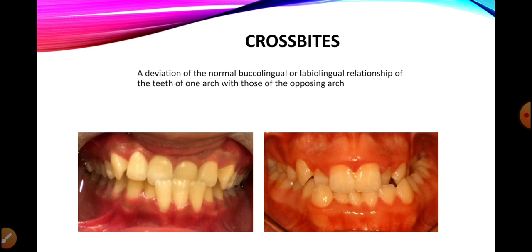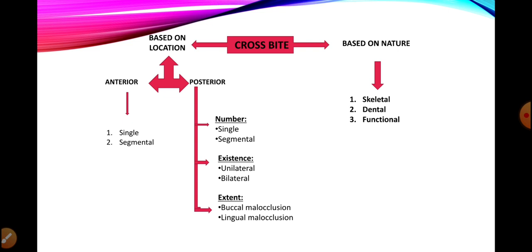Moving towards the types and classification of crossbite: we usually classify crossbite on the basis of location — where the crossbite is present — and on the basis of nature — what may be the possible cause. On the basis of location we classify crossbites as anterior crossbite and posterior crossbite. If the crossbite is present in the anterior region of the maxilla and mandible it is termed an anterior crossbite.